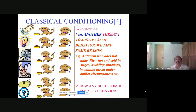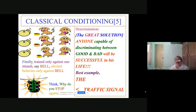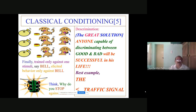A smoker may say, 'There is already pollution; if I smoke one more cigarette, what will happen?' Pavlov said discrimination is a great solution — anyone capable of discriminating between good and bad will be successful in life. The best example is the traffic signal: we stop because it is dangerous to proceed. However, in the case of addiction where body chemistry has already changed and the hypothalamus has been re-tuned, behavioral therapy alone is not always possible.